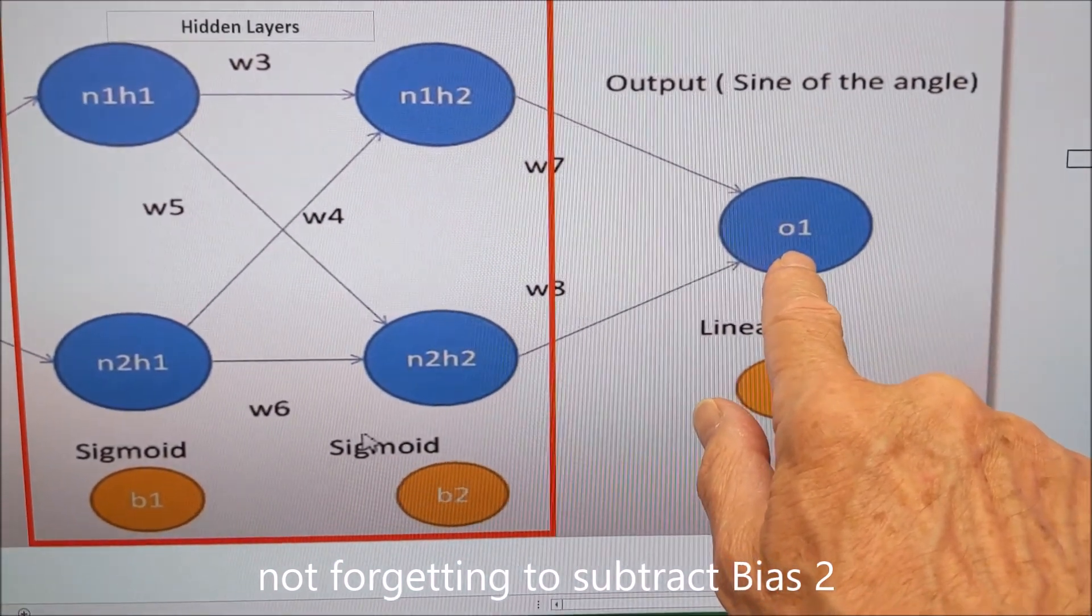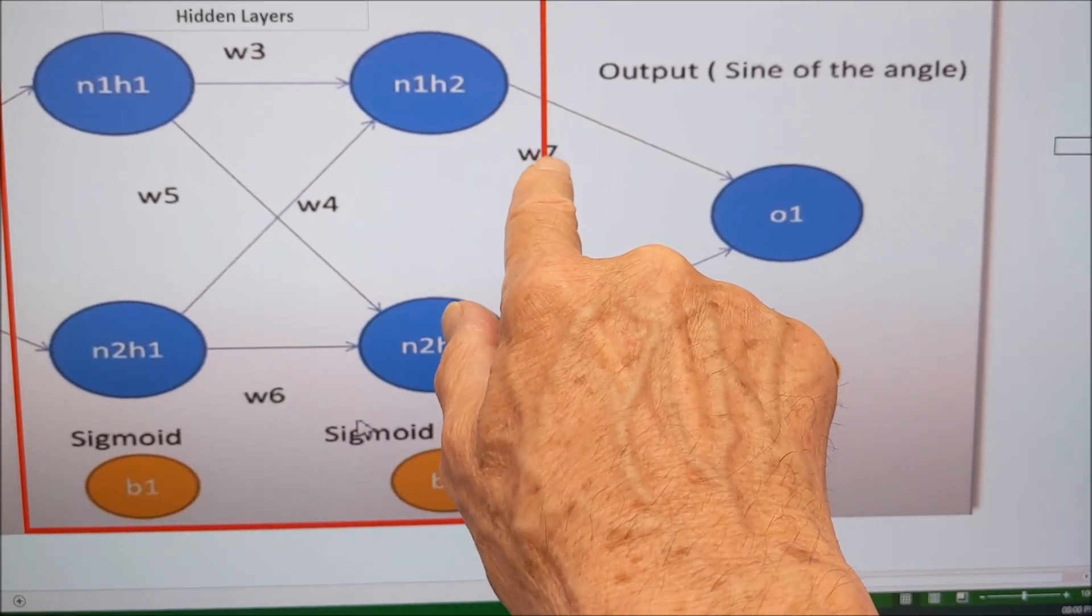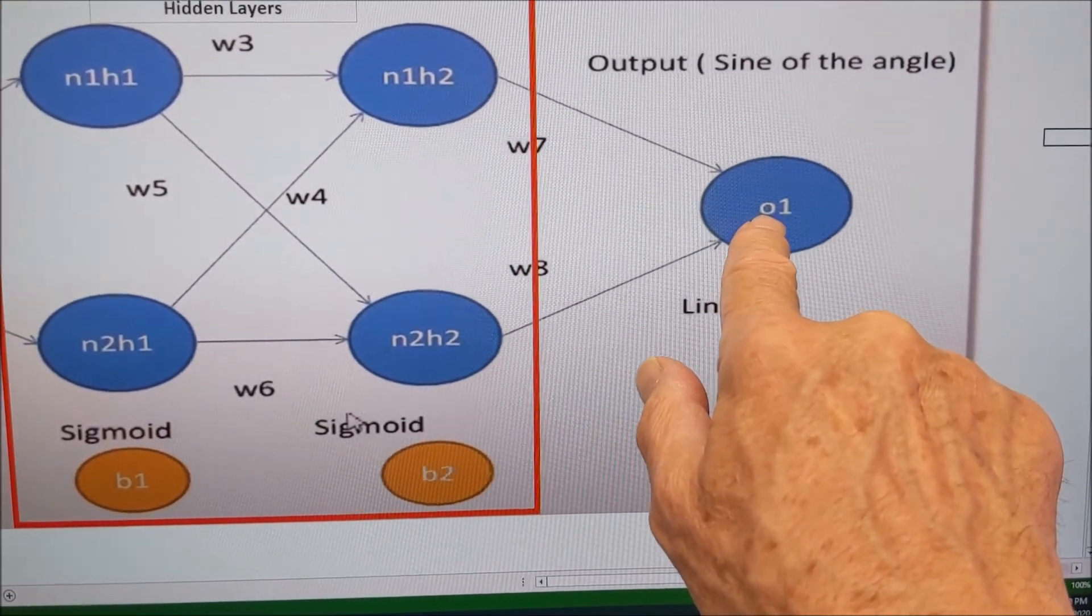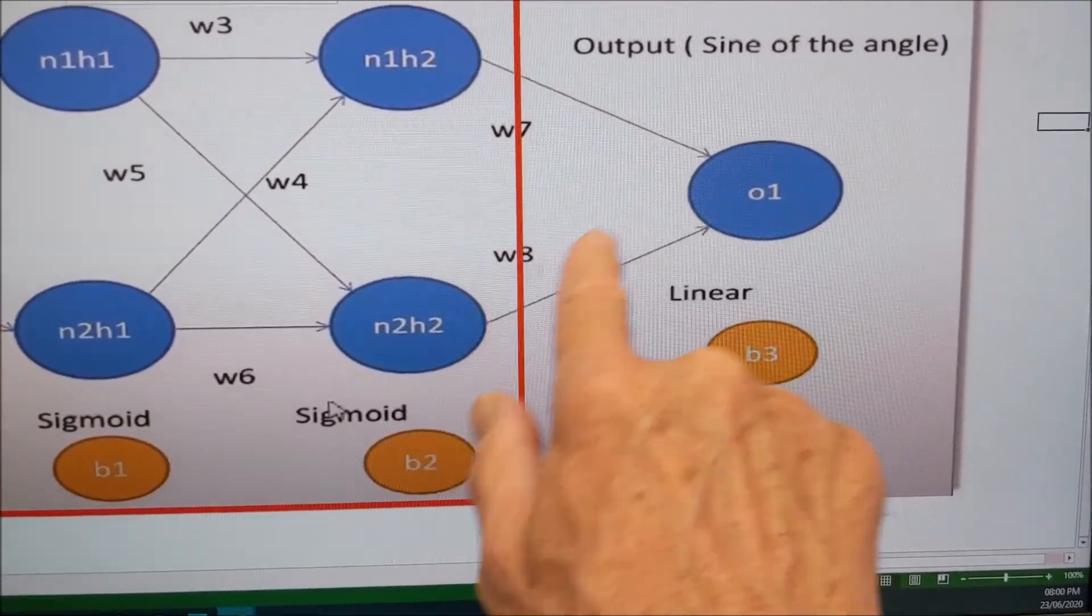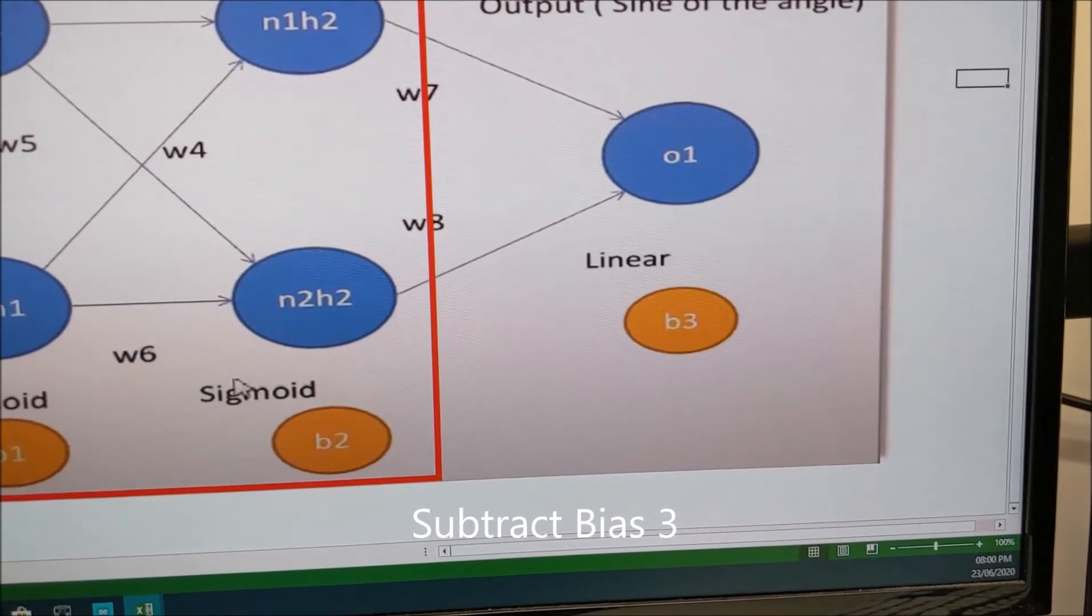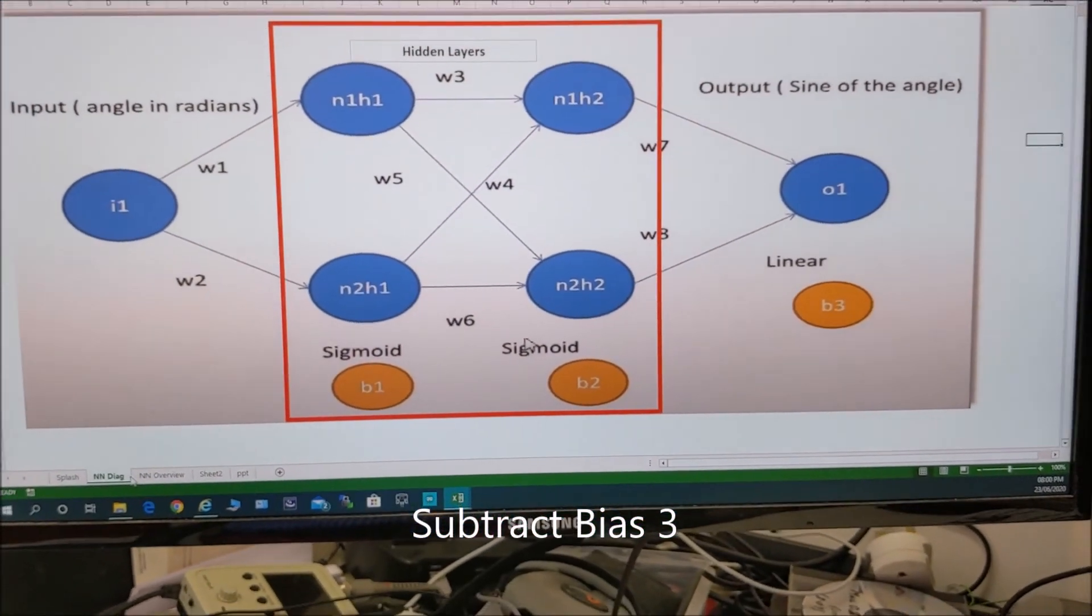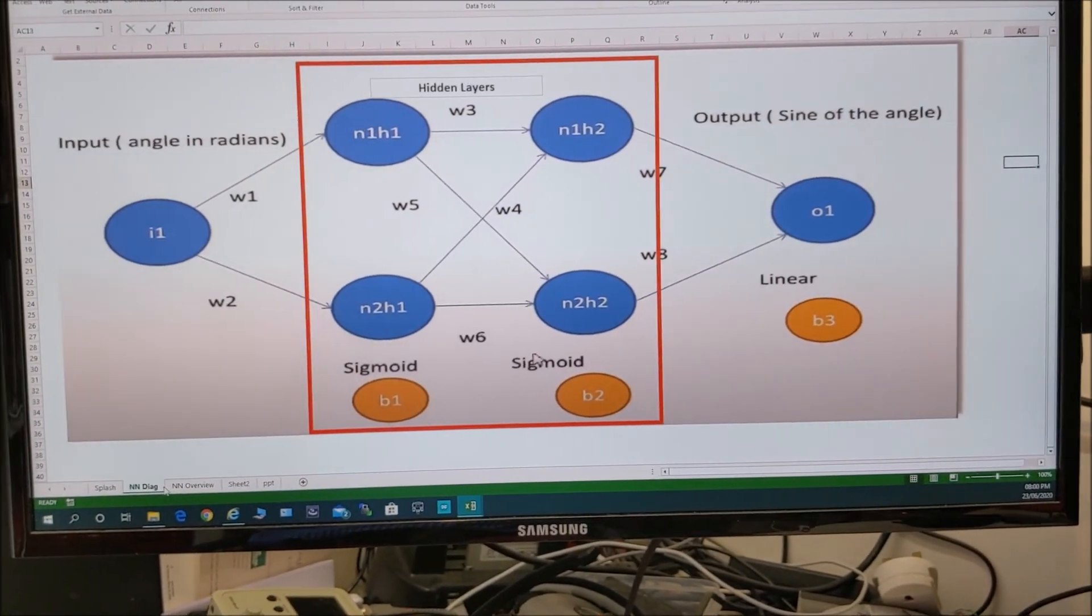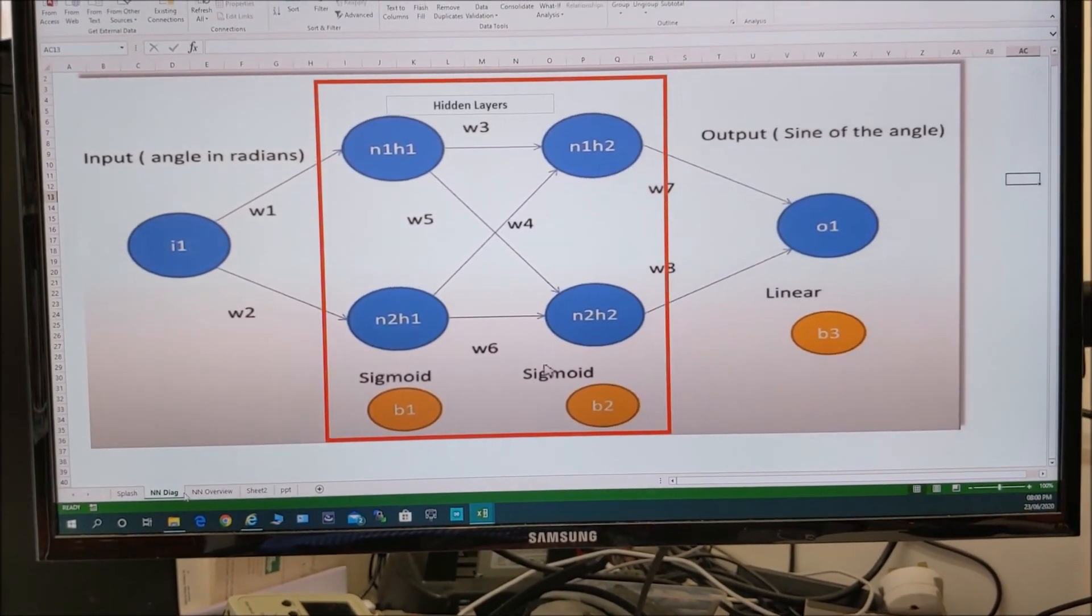So now we've got these. Then how do we get the output? Well, take a guess. We take this 2,1 value, multiply it by W7 and add it to this value 2,2 times W8. And then we apply the bias. And that is all there is to it in the forward pass. That is all there is to it. Really simple. And Excel eats it up.